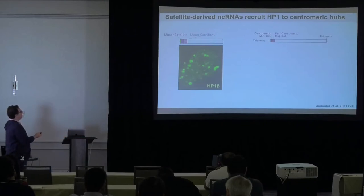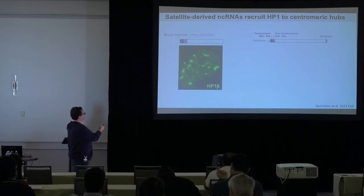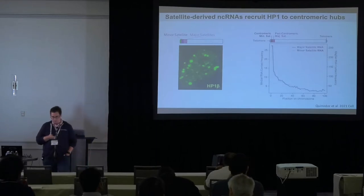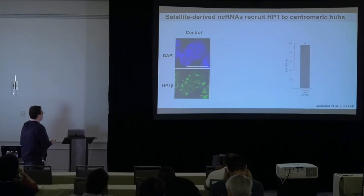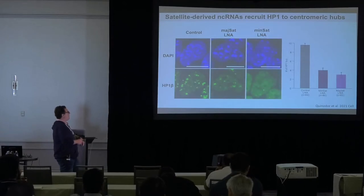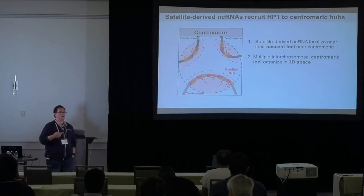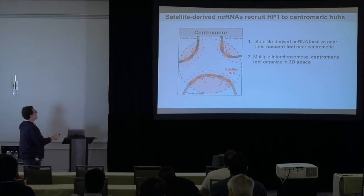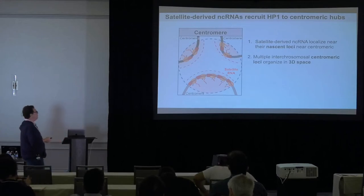One example of RNA-driven compartmentalization involves major and minor satellite RNAs, which are enriched at centromeric and pericentromeric regions and associated with HP1 heterochromatin. When we disrupt the major satellite RNA with an ASO, we see decreased intensity and number of HP1 foci. Similarly, disrupting the minor satellite RNA decreases HP1 foci, suggesting that transcription of these satellite-derived RNAs from centromeric regions is important for driving DNA-DNA organization and recruitment of HP1 to chromocenters.